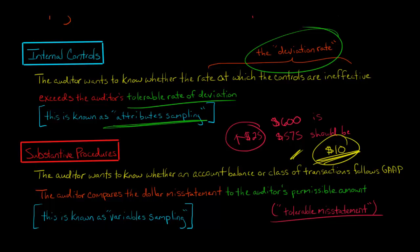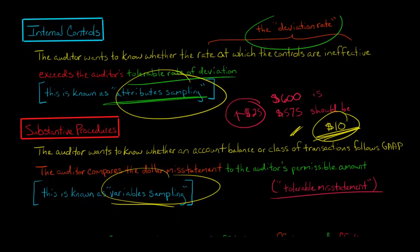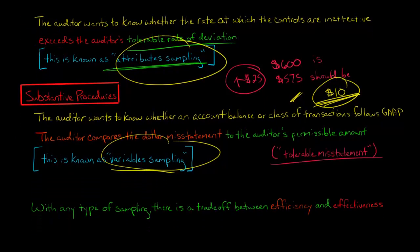When we're doing sampling in the context of substantive procedures, we refer to it as variable sampling. So we're talking about internal controls, we're talking about attribute sampling and substantive procedures, variable sampling. We're generally trying to look at what should the dollar amount be of accounts receivable or something like that.